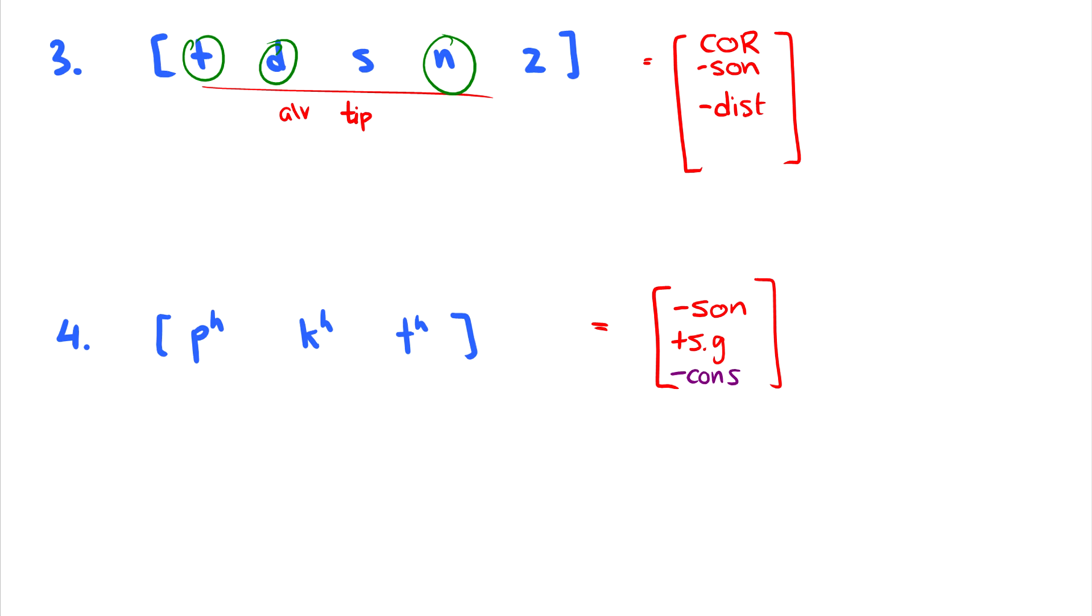So to get rid of the h in this group, we put minus consonantal. So this is minus sonorant, minus consonantal, plus spread glottis.